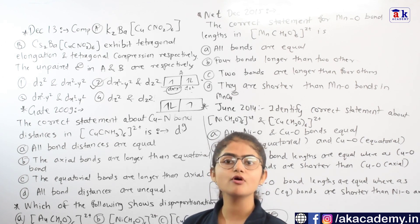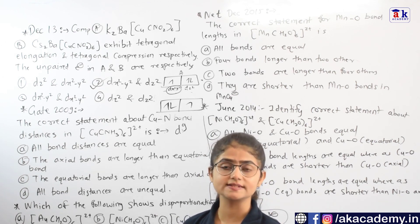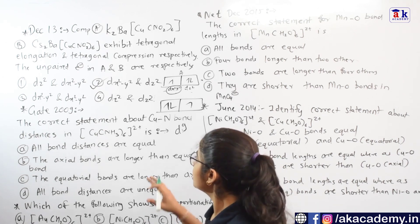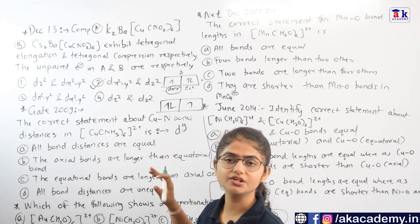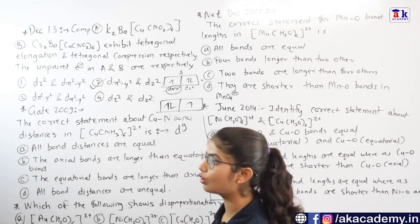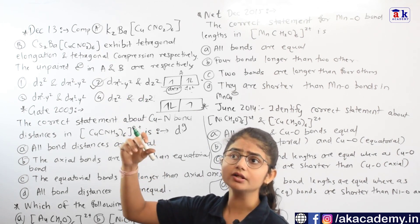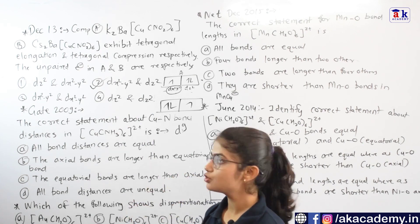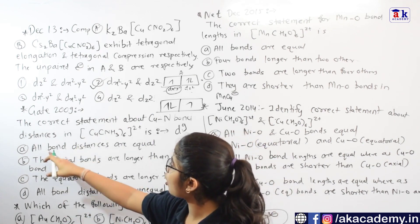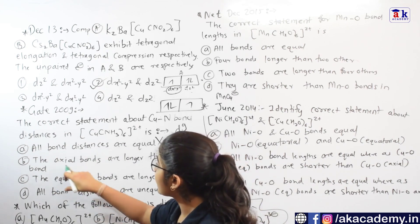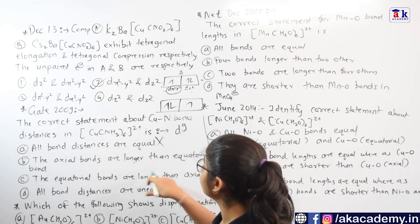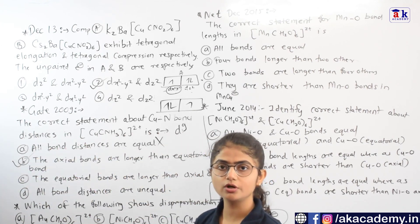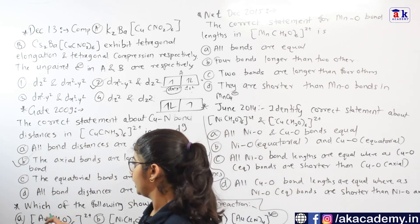Also remember that for high spin d6 complexes we always get tetragonal compression. For d9, since elongation occurs in most cases, the axial bonds are longer and the equatorial bonds become shorter. So the option stating that axial bonds are longer than equatorial bonds is the correct answer for this question.